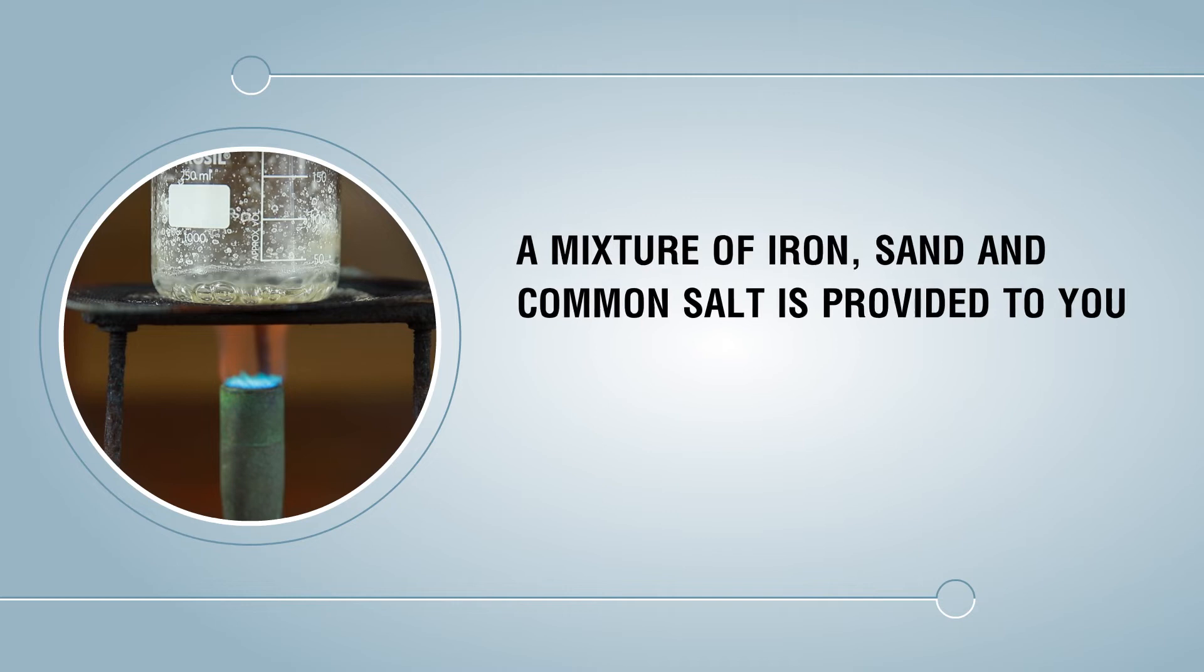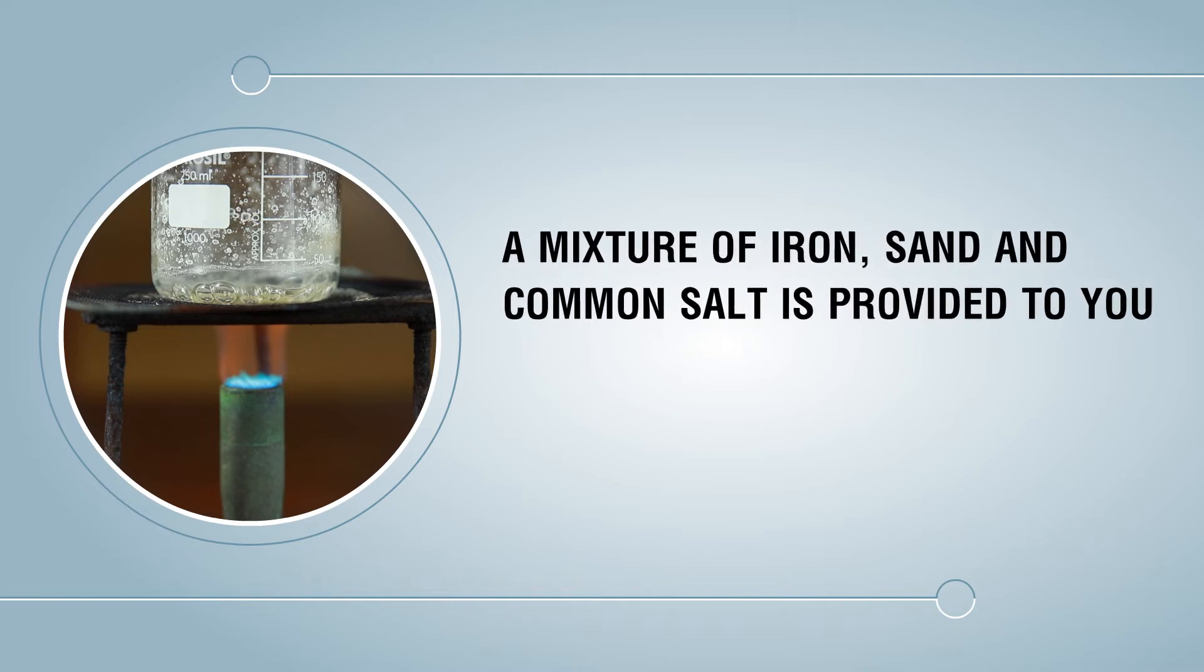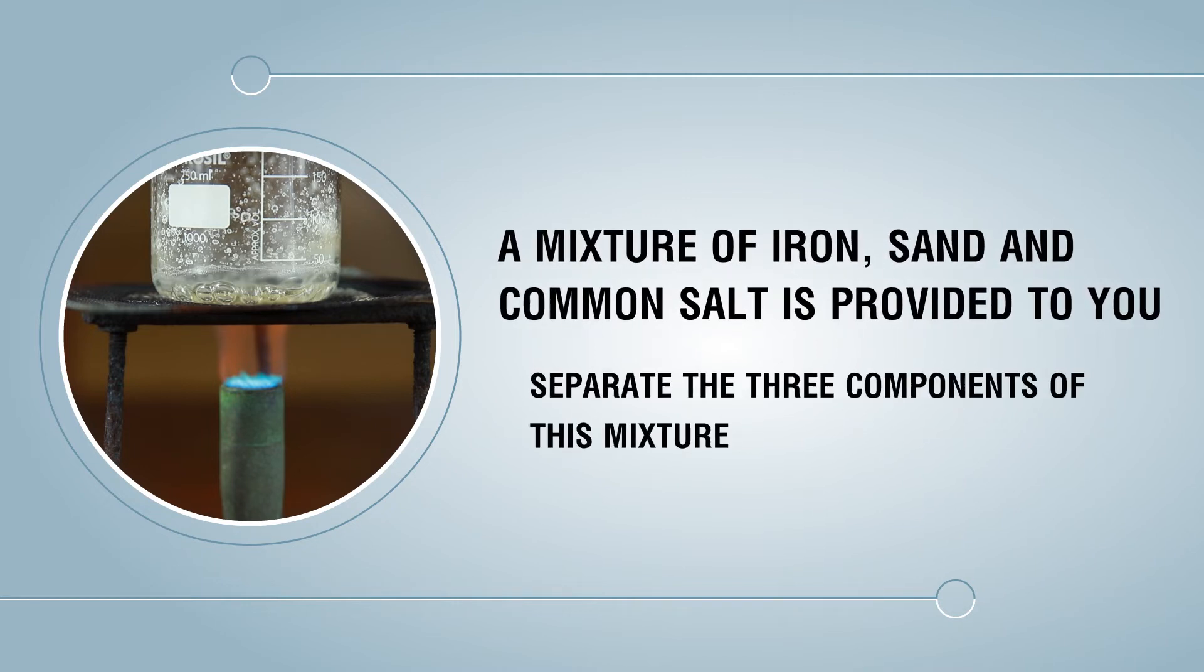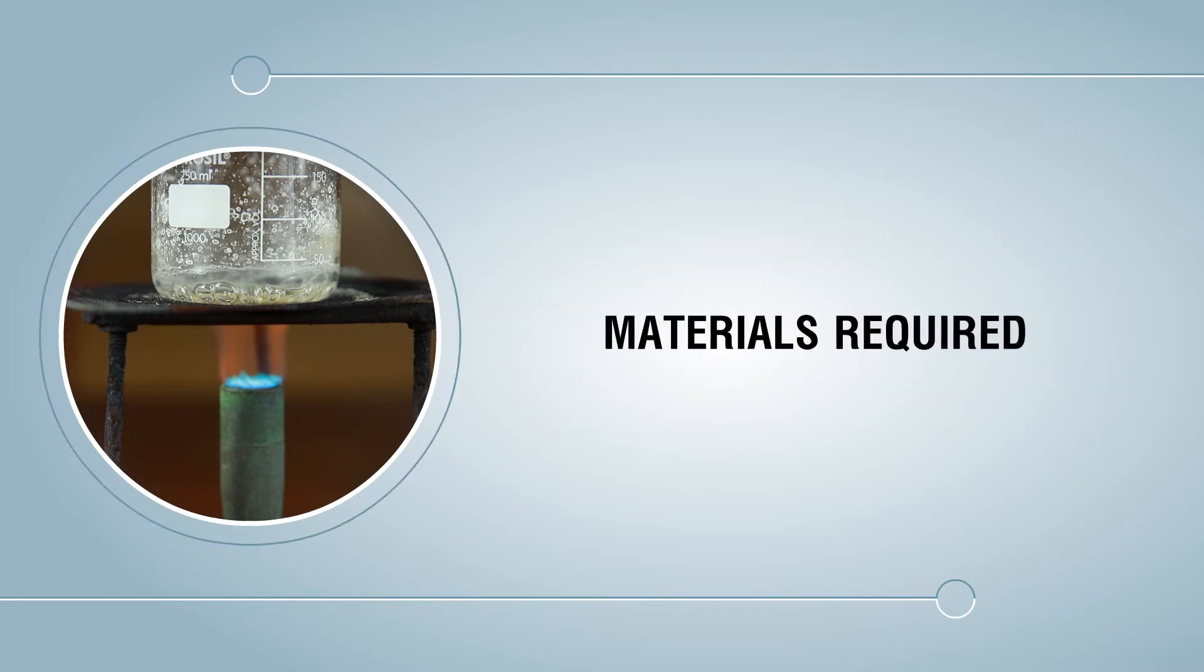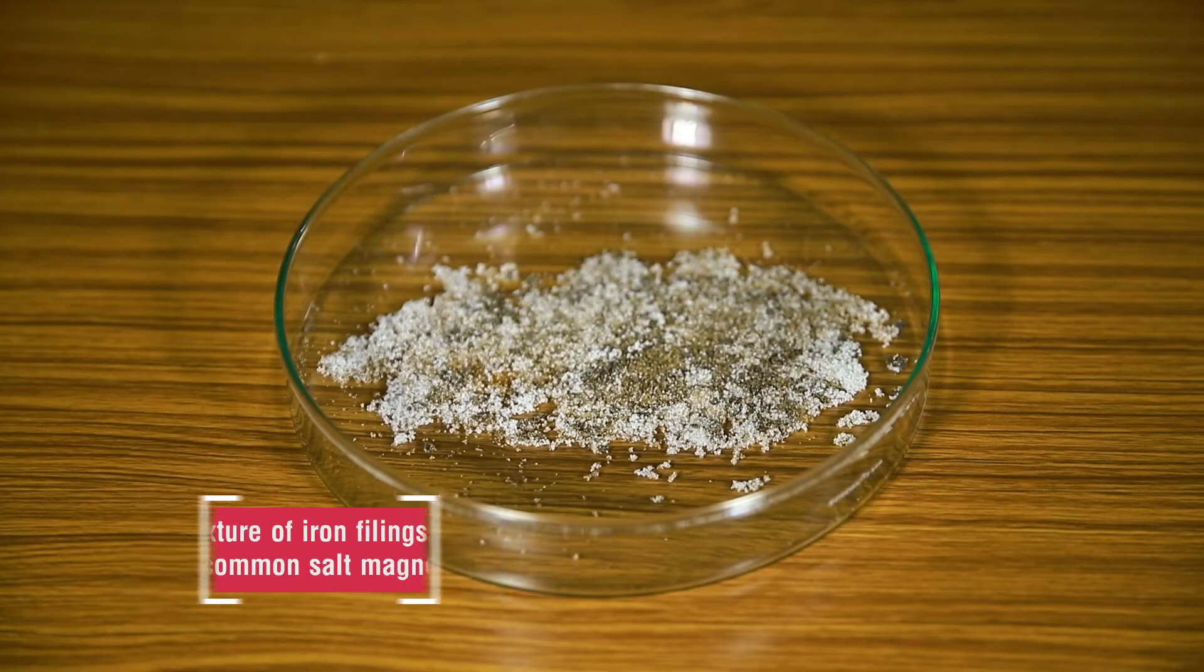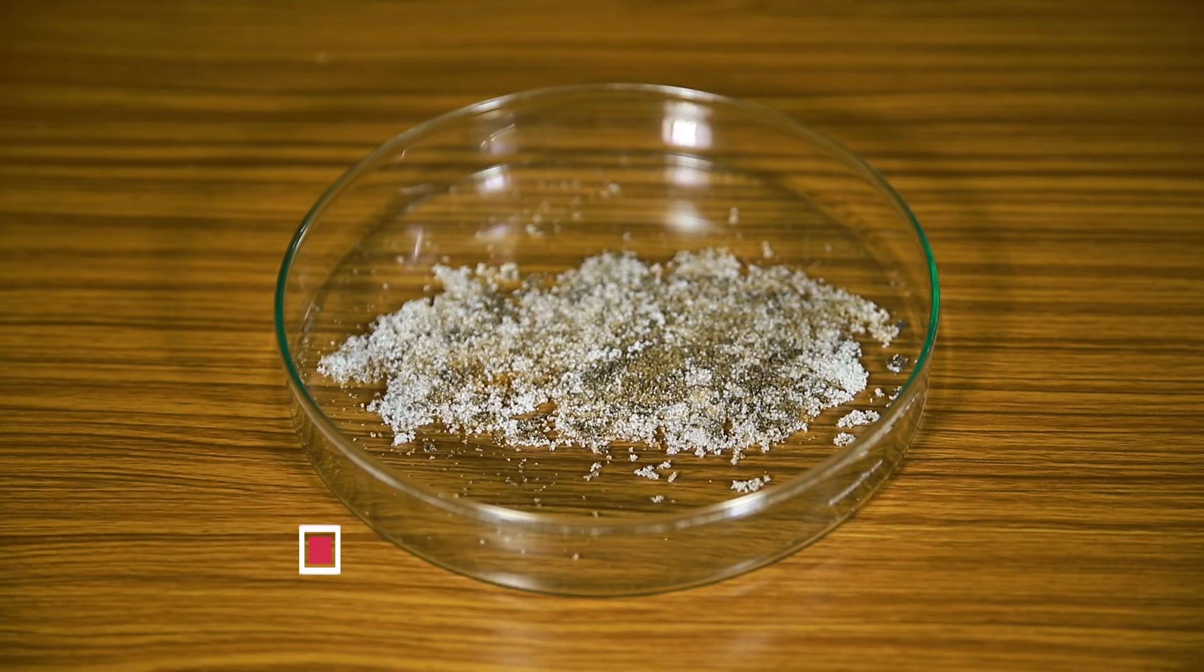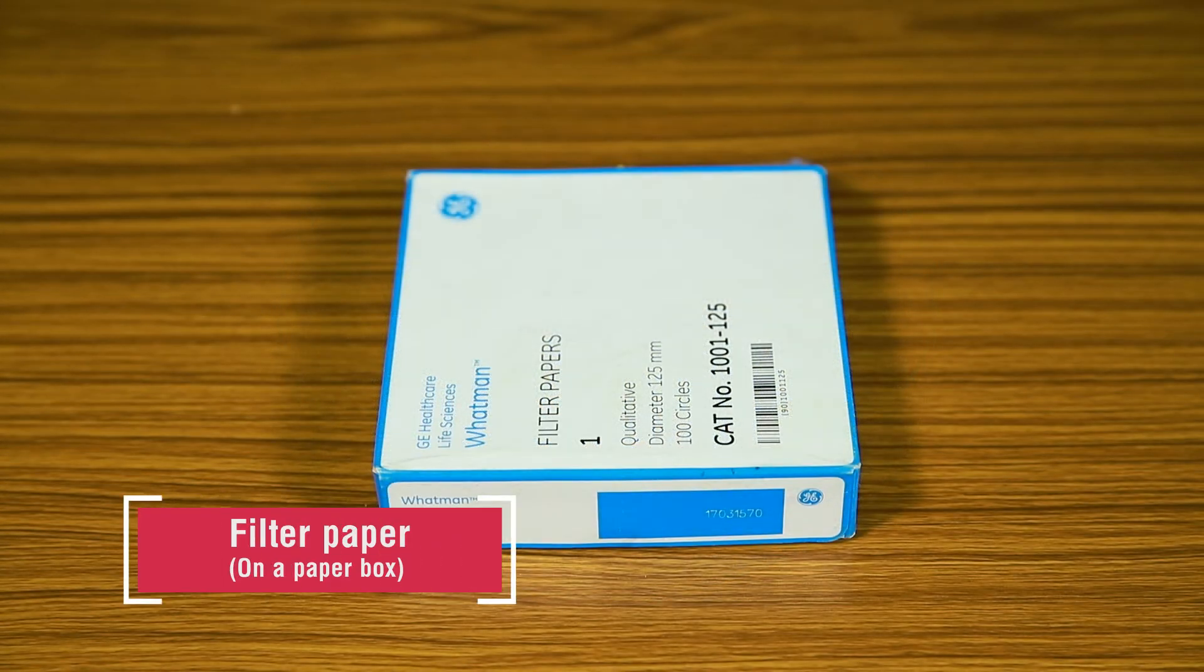A mixture of iron, sand, and common salt is provided to you. Separate the three components of this mixture. Materials required: a mixture of iron filings, sand, and common salt, magnet kept in a Petri dish, filter paper, paper box.